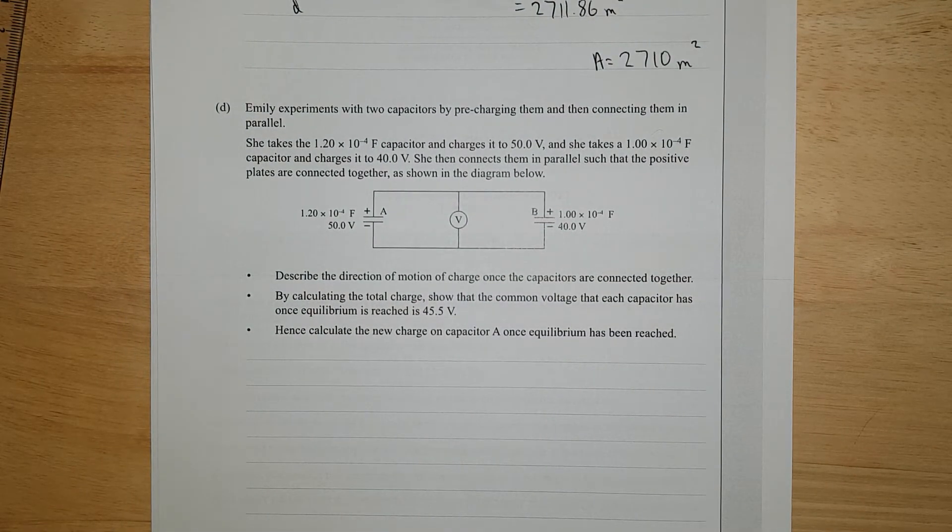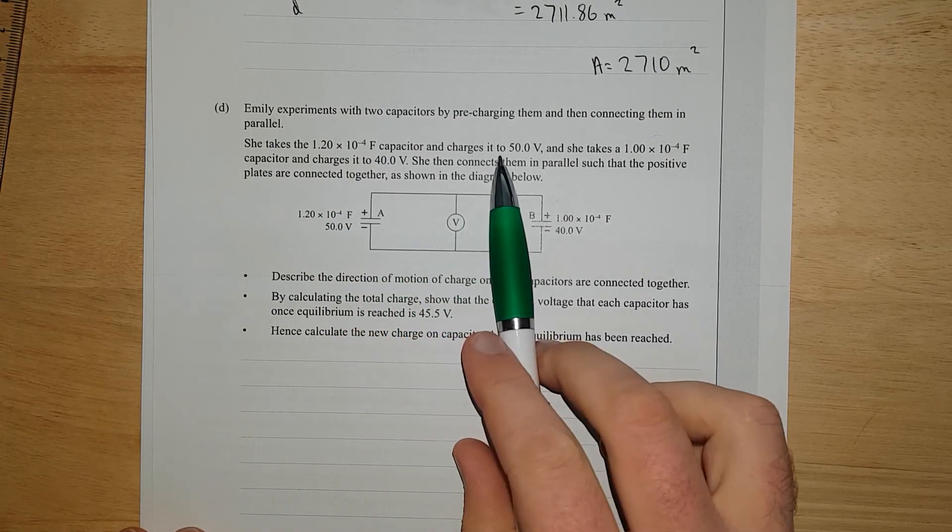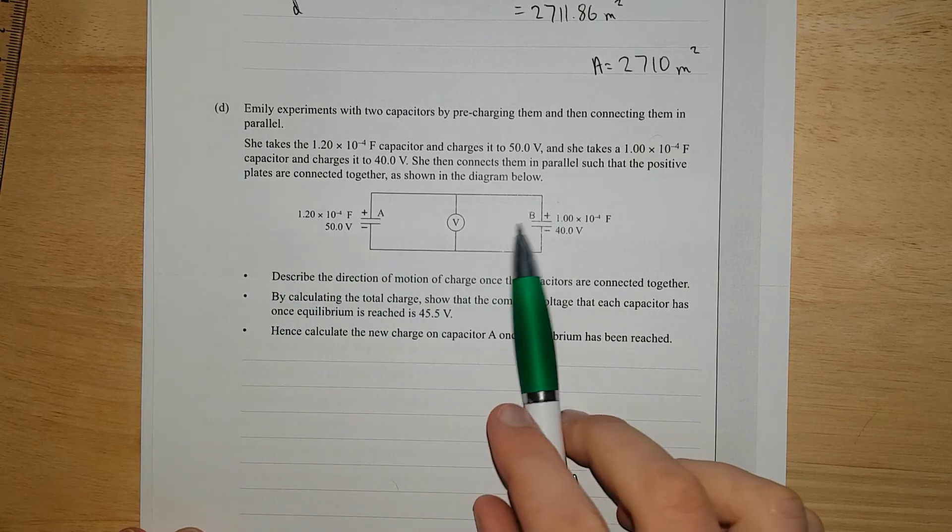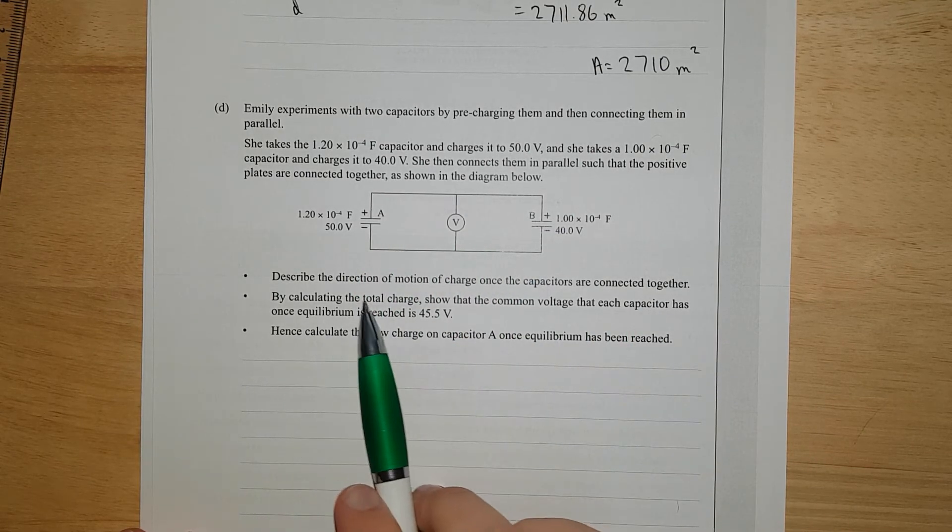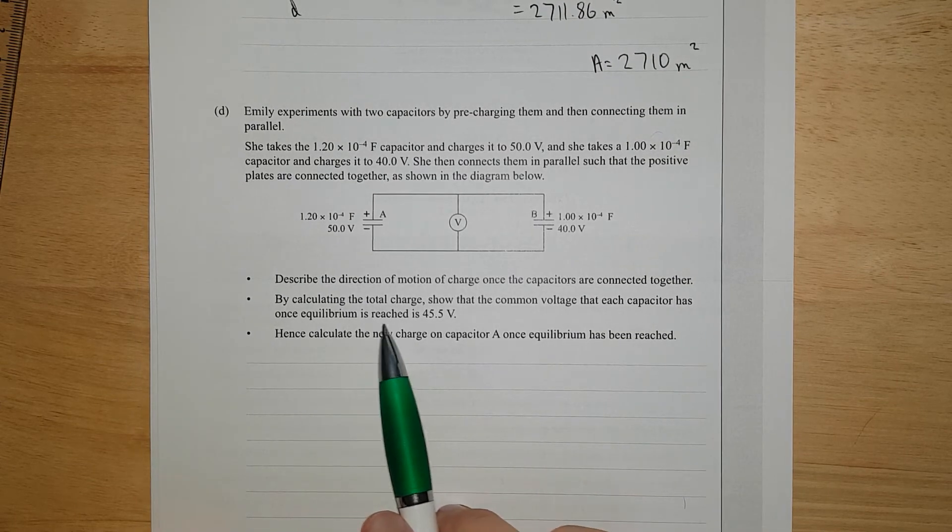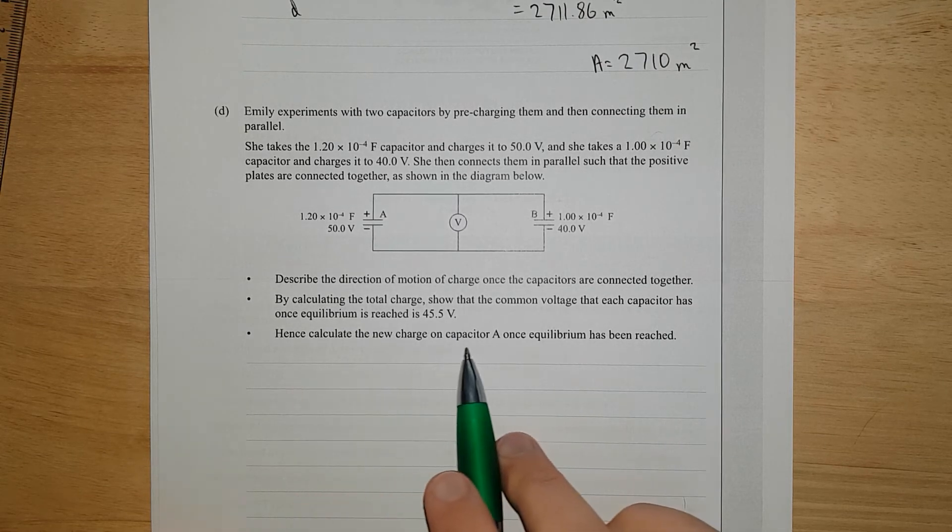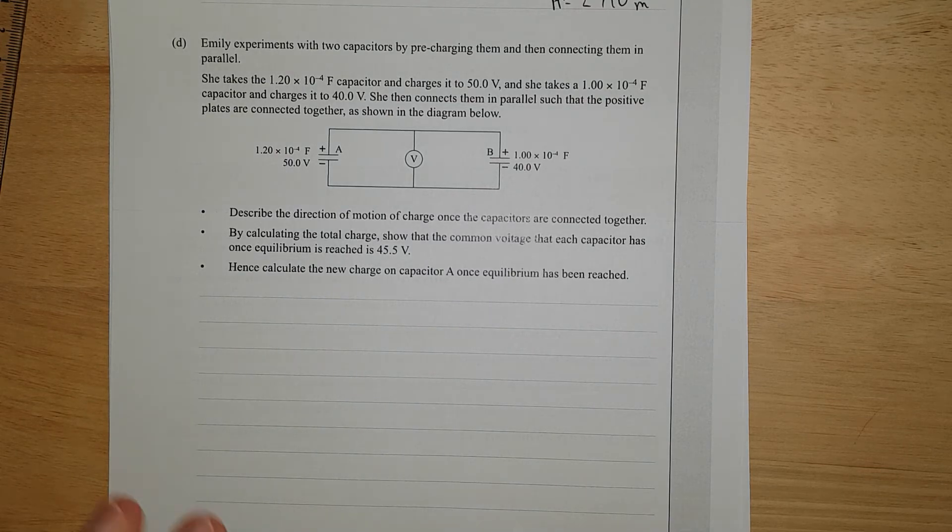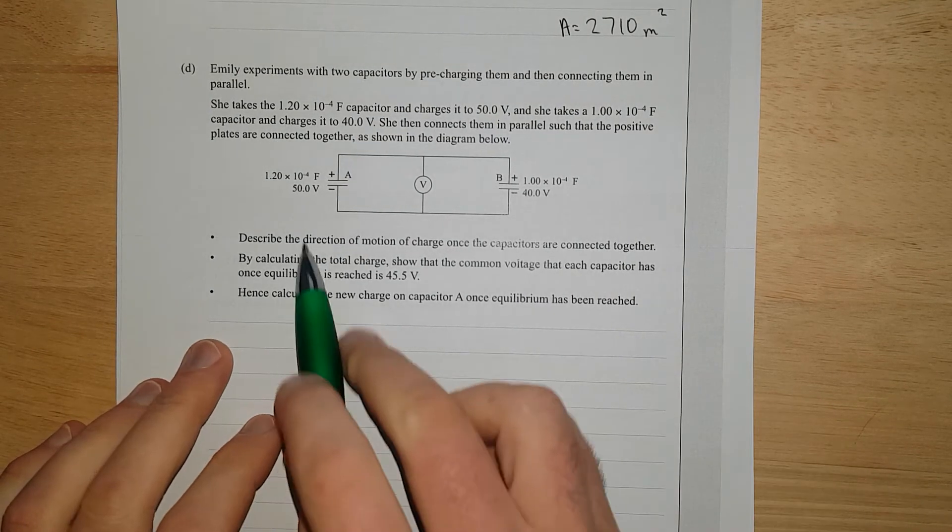Emily experiments with two capacitors by pre-charging them and connecting them in parallel. She takes a 1.2 Farad capacitor and charges it to 50 volts, takes a 1 Farad capacitor, charges it to 40 volts, and connects them in parallel. Describe the direction of motion of charge once the capacitors connect together. This has a higher voltage, it will run that one backwards. Show the common voltage is 45.5 volts. This is kind of deja vu because I was just talking about that. I used to write out all the answers but now I just do these questions on the fly.